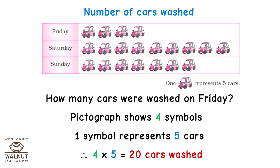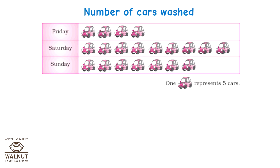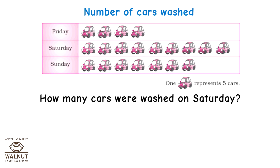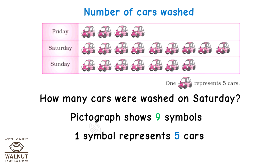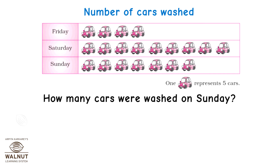How many cars were washed on Saturday? The pictograph shows nine symbols; one symbol represents five cars, so 9 into 5 which is equal to forty-five cars were washed on Saturday.